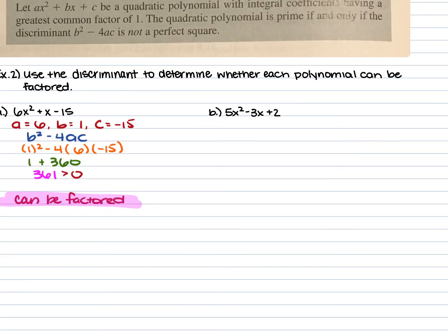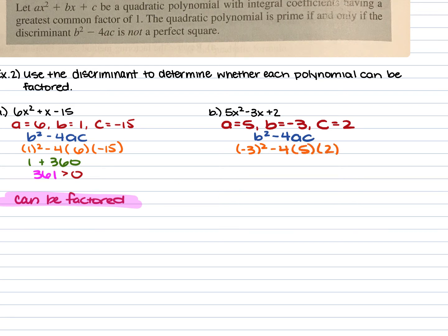For example 2b, we have 5x squared minus 3x plus 2, giving us a of 5, b of negative 3, and c of 2. Plugging into the discriminant: negative 3 squared minus 4 times 5 times 2. Negative 3 squared is 9; negative 4 times 5 is negative 20; negative 20 times 2 is negative 40. So 9 minus 40 gives us negative 31. Since negative 31 is less than 0, this cannot be factored.